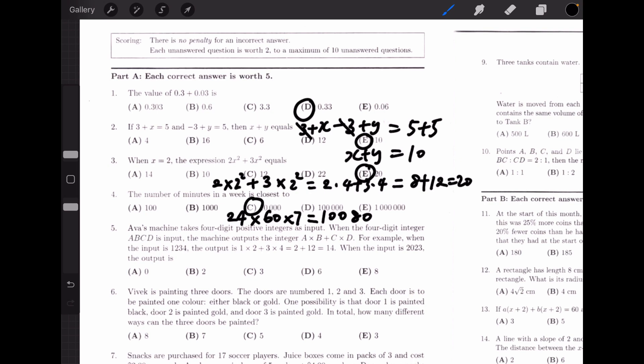A bus machine takes 4-digit positive integer as input. When the 4-digit integer a, b, c, d is input, the machine outputs the integer a times b plus c times d. For example, when the input is 1234, the output is 1 times 2 plus 3 times 4, which gives us 14. When the input is 2023, the output should be 2 times 0 plus 2 times 3, which is 6.